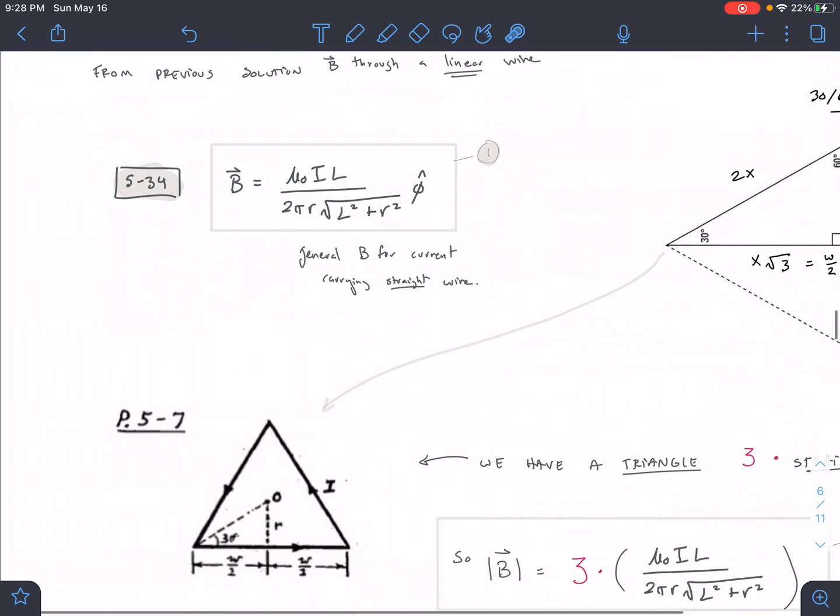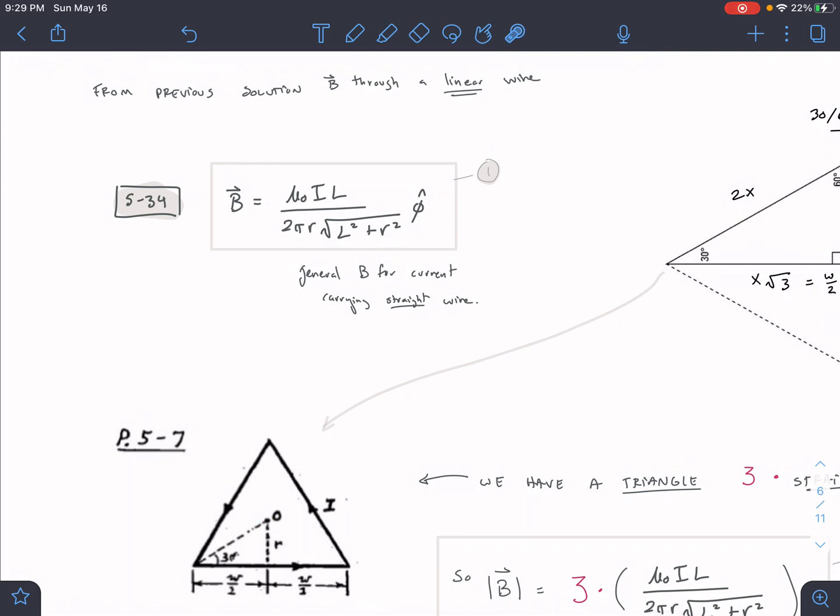So we have an equilateral triangle. Each side of the triangle is length w, and we're trying to find the B-field in the center.